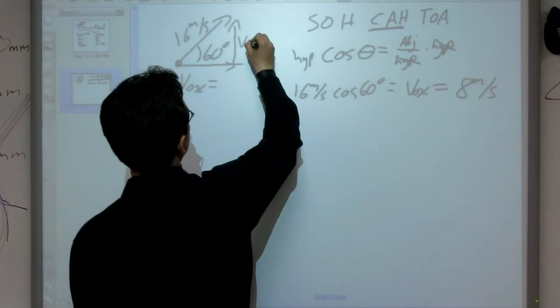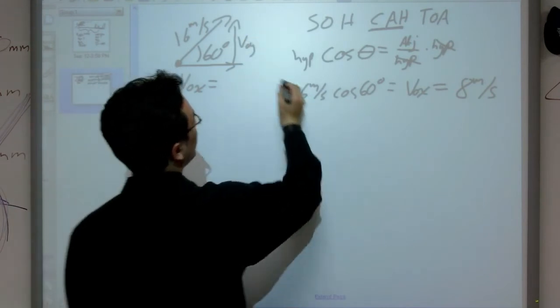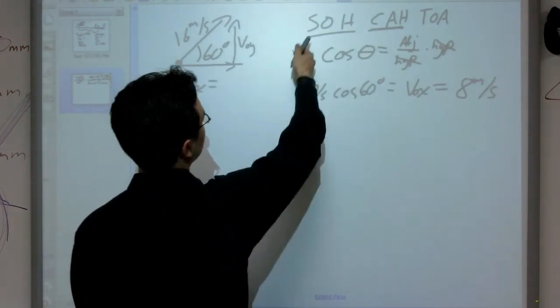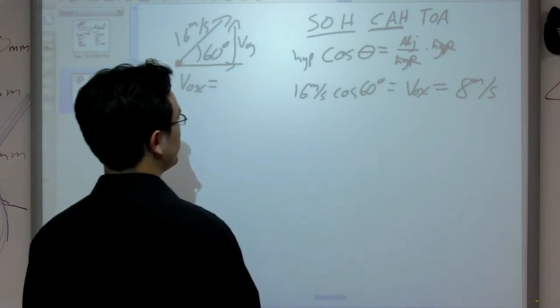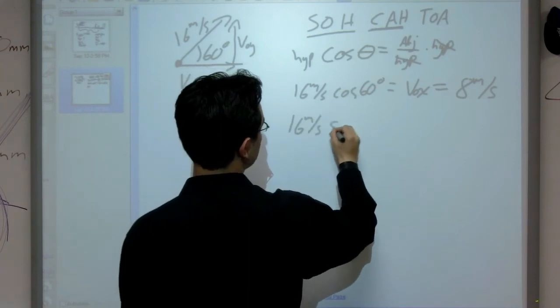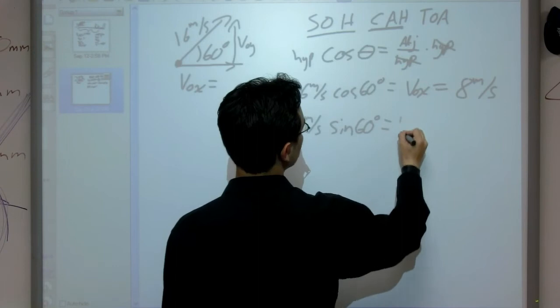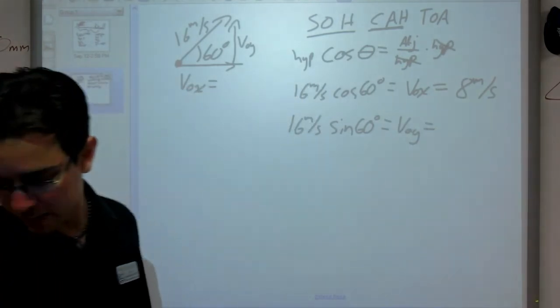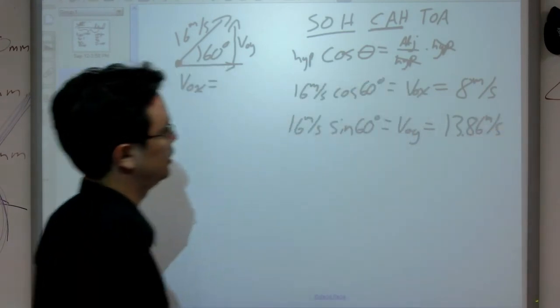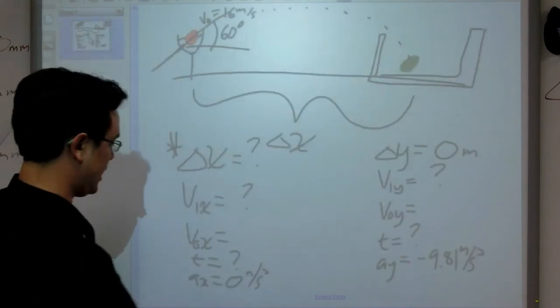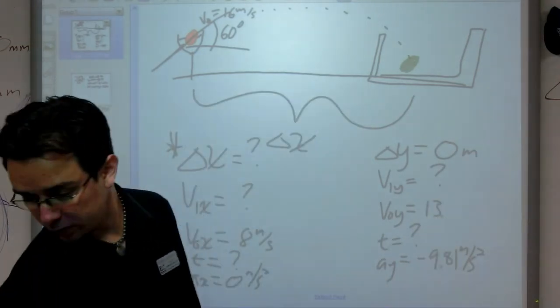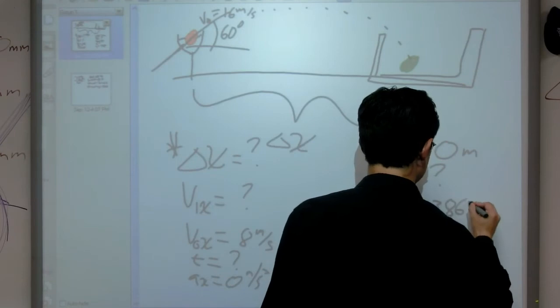Now let's do the same thing for our initial in the y, because we'll probably need that. This time I'm dealing with the opposite side and the hypotenuse. Let's go ahead and get some more experience in with our trig functions. When I work this all out, I'm going to find out that it comes up to 16 meters per second times sine of 60 degrees equals v0 in the y direction. And when I evaluate that, that's going to come up to 13.86 meters per second. Now I have my initial velocity in the y and the x. In the x, it was 8 meters per second. And in the y, it was 13.86 meters per second.